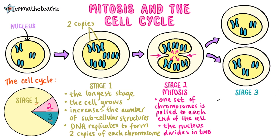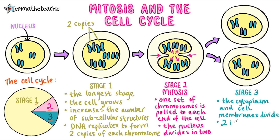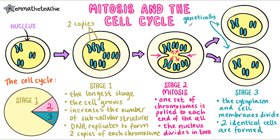And finally in stage 3, the cytoplasm and cell membranes divide to form two identical cells. These cells are genetically identical to each other and also to the parent cell, which was the initial body cell.